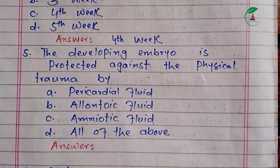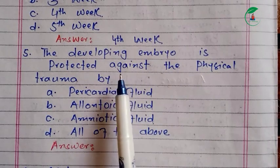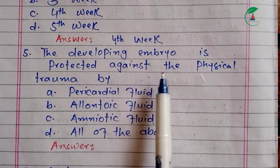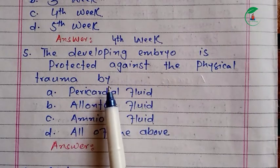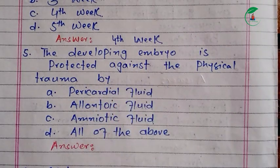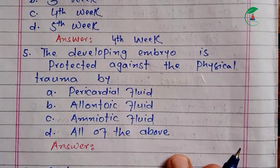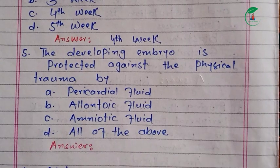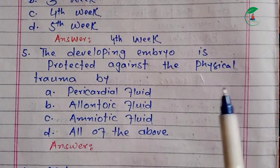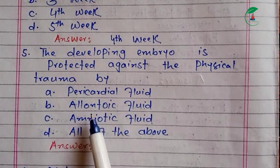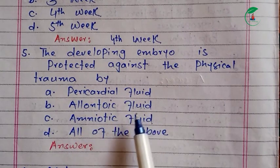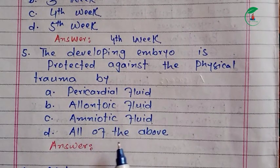The developing embryo is protected against physical trauma by what? The options are pericardial fluid, amniotic fluid, or all of the above. The correct answer is amniotic fluid, which protects the developing embryo from physical trauma and pressure.